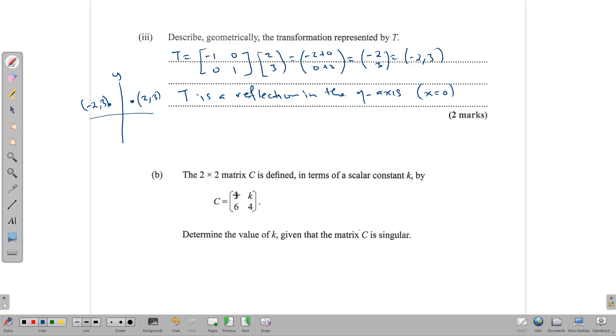The next part of the question is: C is a 2 by 2 matrix in terms of a scalar constant K, and we have to determine the value of K given that matrix C is singular. Now what's a singular matrix? A singular matrix has a determinant of 0. So the determinant of C is 0. How do we find the determinant? We multiply the diagonal: 3 times 4 minus 6K times 6 times K, and that will equal 0 since the determinant is 0. So we have 12 minus 6K equals 0.